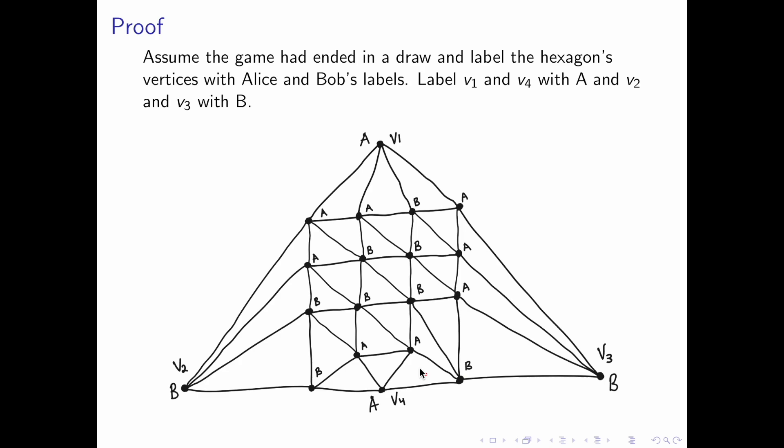As an example here, this vertex would be colored 1 because there's a path from v1 to this vertex with all vertices labeled A.